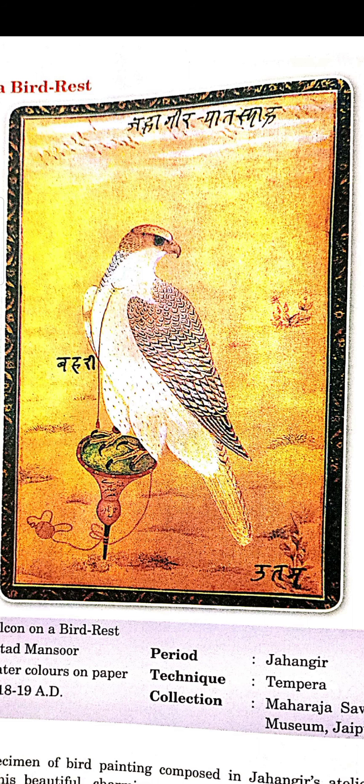Toh sampurn background ko orange, yellow ochre aur yellow color ke shades mein banaya gaya hai. Aasman mein halke badal safed rang se banaye gaye hain. Anye pakshiyon ko urte hue dikhaya gaya hai. Aur yeh bird — baaj pakshi — bird rest par baitha hua hai. Iski aankhein atyadhik bhavyukta hain, iski chonch bahut adhik teekhi nukili bani hui dikhai de rahi hai.